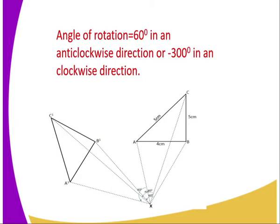In this case, you can see that object B and image B' are moving in an anticlockwise direction, so the angle should be positive 60 degrees. The angle between B, X, and B' is 60 degrees. Because the object is rotating in the anticlockwise direction, we get the angle of rotation being positive 60 degrees.